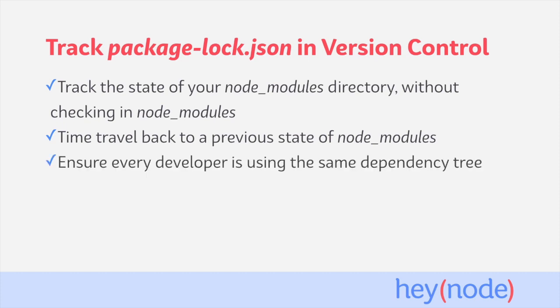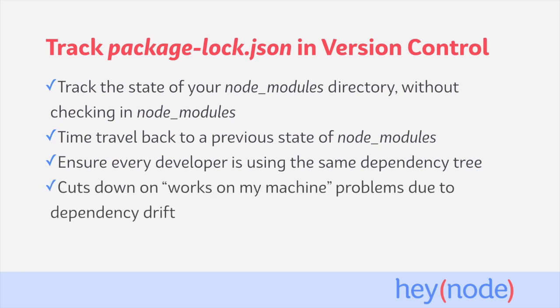Likely the biggest advantage of keeping your package-lock file checked into your version control system is ensuring that every developer working on a project will have the same dependency tree. This helps cut down on works-on-my-machine type problems due to dependency drift, like in the scenario we discussed earlier.